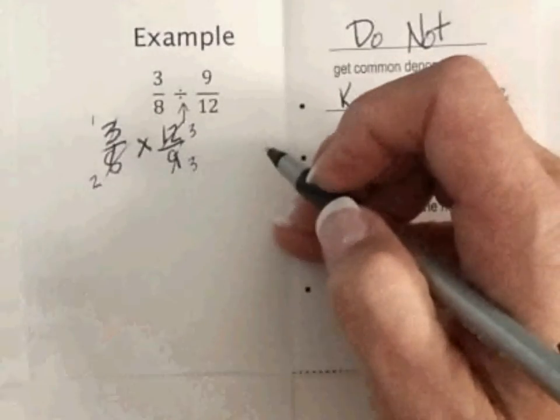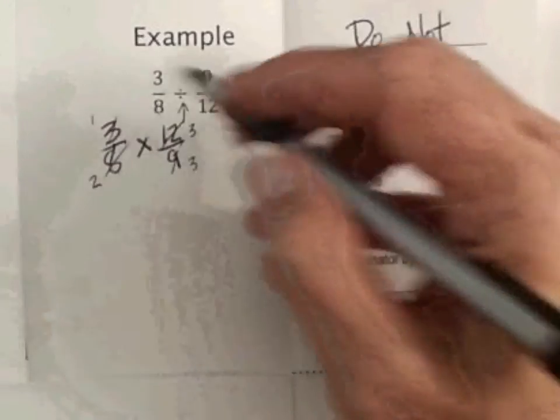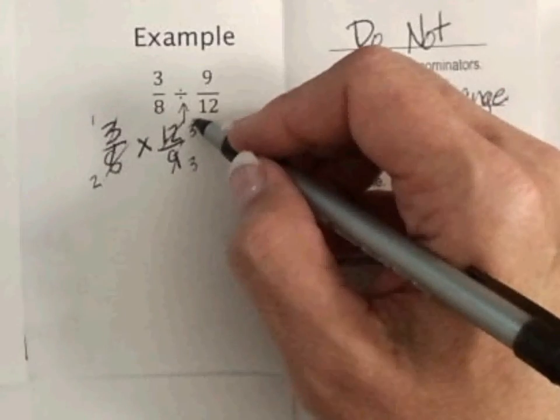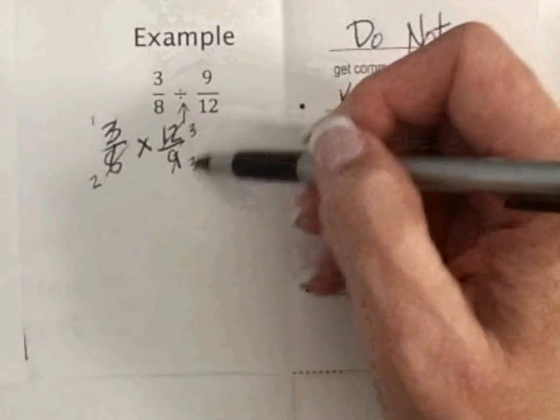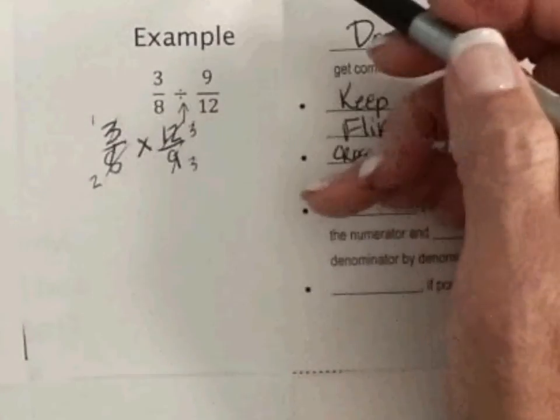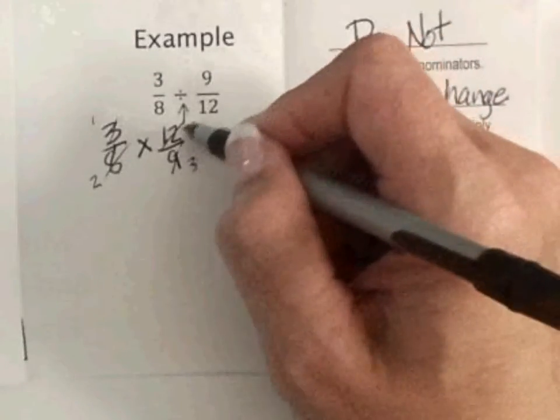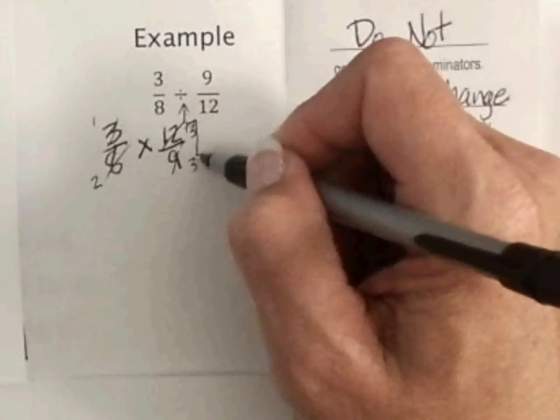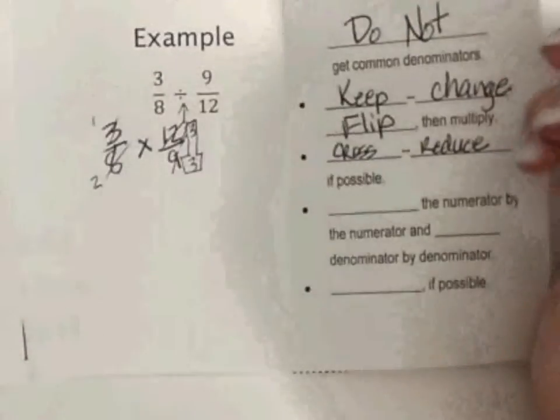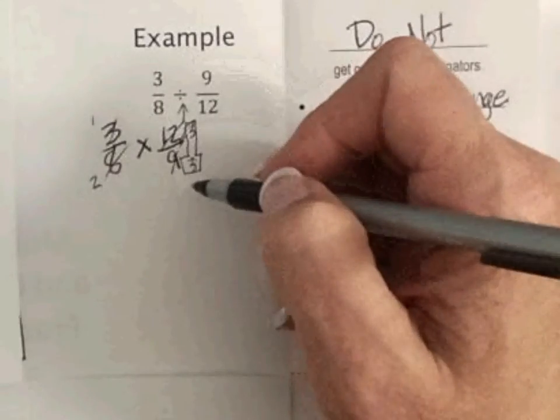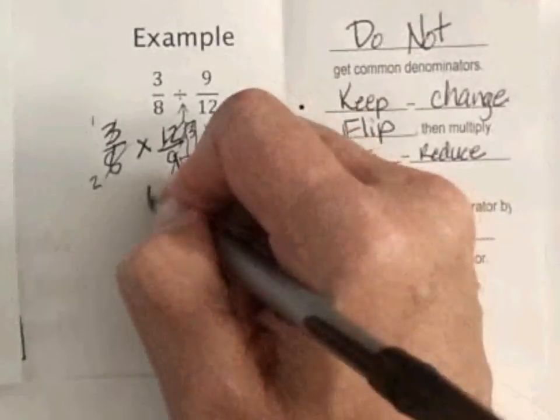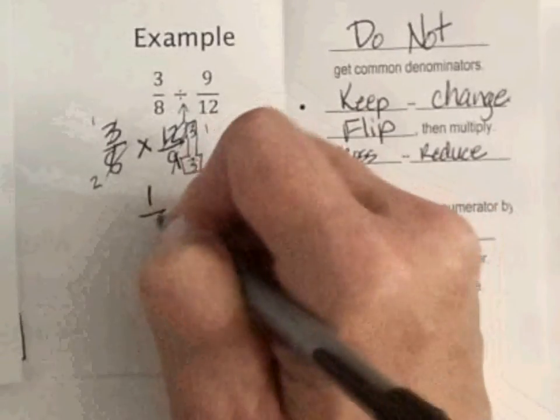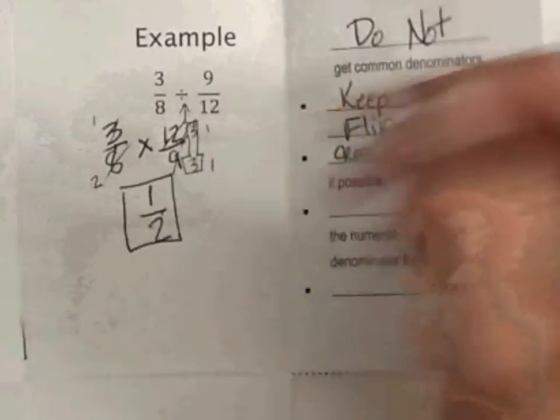Now, I'm going to finish just like, what did I do? You can cancel again. Oh, I can cancel again. Miss Nelson pointed out to me that I have 3 over 3 now on this side. And what does that become? Any number over itself comes our big 1. So, this actually becomes 1. So, now we have 1 times 1 is 1. 2 times 1 is 2. And our answer is 1 half.